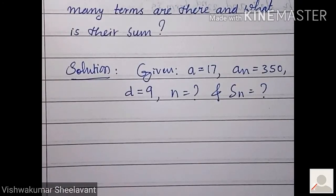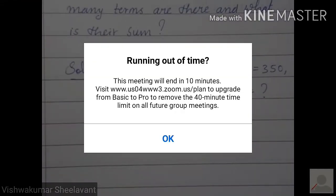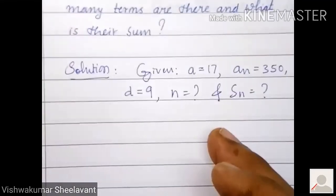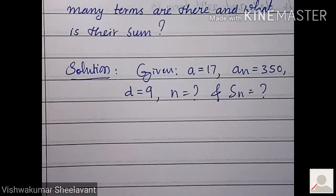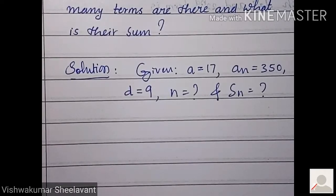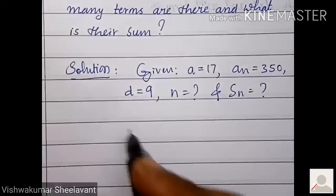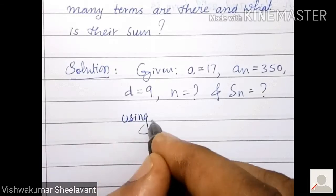There are only two formulae relating a, an, n, d, and Sn. Sn is to be calculated, therefore we have to take now an formula only. In one formula there has to be only one unknown. If multiple unknowns are there, you cannot use that.